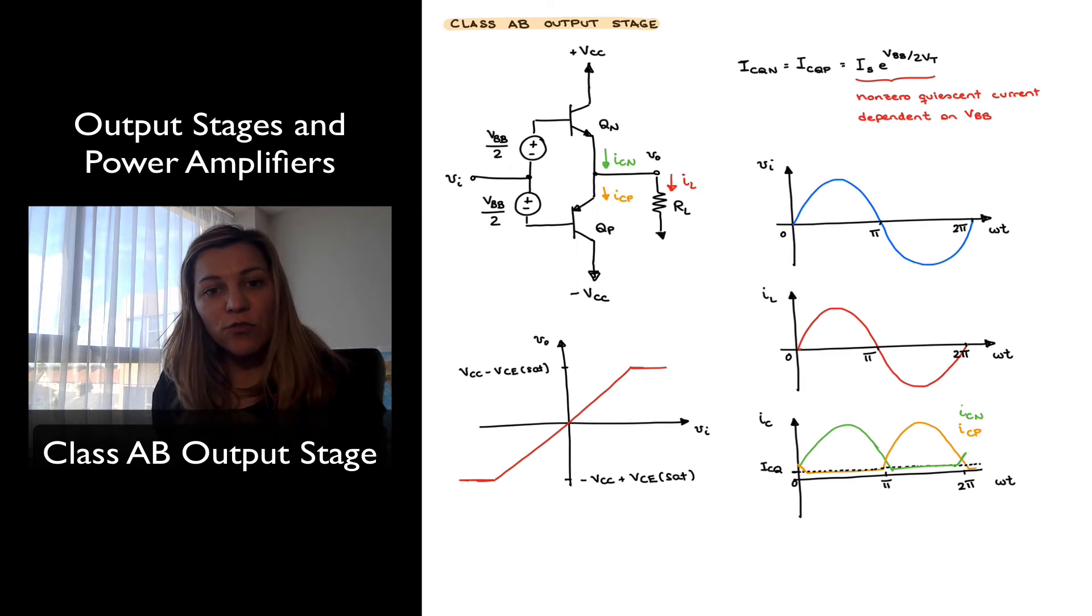And therefore, it eliminates that crossover distortion that we used to see at the output. And we can see that very clearly in the voltage transfer characteristic, where we will now get a perfectly straight line, except once we reach the saturation regions for large values of the output voltage. Values that reach VCC minus the saturation voltage. So, this is how the class AB output stage operates.